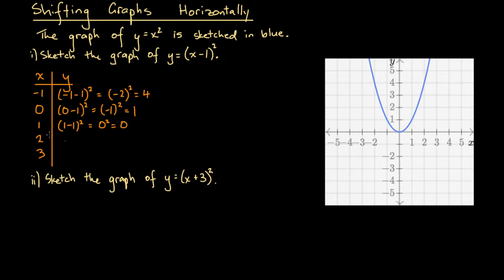At x equals 2, we have (2 minus 1) squared, which is 1 squared, giving y equals 1. At x equals 3, we have (3 minus 1) squared, which is 2 squared, giving y equals 4. So in other words, we have these coordinate points.